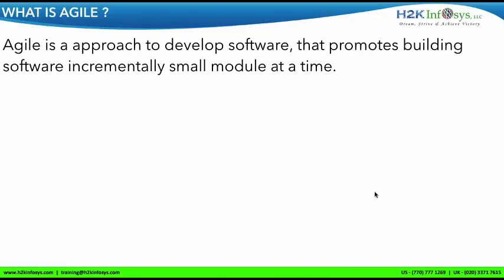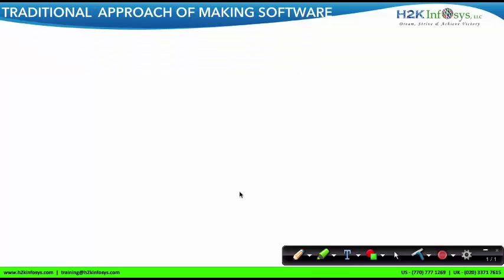Let's start with the question: what is Agile? The definition says Agile is an approach to develop software that promotes building software incrementally, one small module at a time. Before I explain the Agile value-driven implementation and its advantages, let me first walk you through the traditional approach of making software, using an online shopping site as an example.